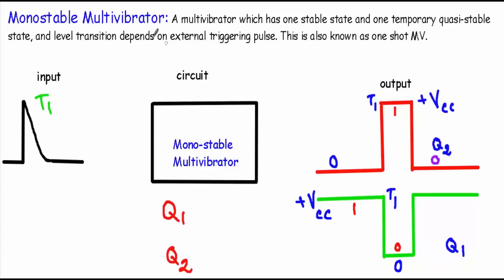In this video I will describe the operation of a monostable multivibrator circuit. A monostable multivibrator circuit has only one stable state and one temporary quasi-stable state, and the level transition depends on the external triggering pulse. This multivibrator is also known as a one-shot multivibrator. A monostable multivibrator circuit will use two transistors Q1 and Q2.